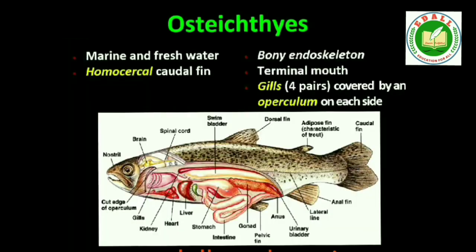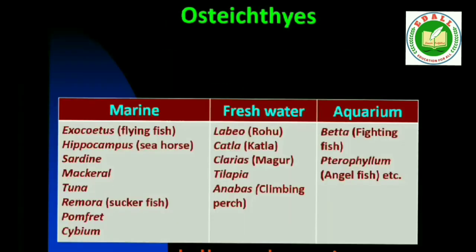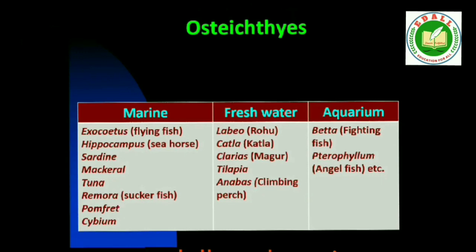Third is Class Osteichthyes. It includes both marine and freshwater fishes with bony endoskeleton. Their body is streamlined. Mouth is mostly terminal. They have four pairs of gills which are covered by an operculum on each side. Skin is covered with cycloid or ctenoid scales. Air bladder is present which regulates buoyancy. Heart is two-chambered — one auricle and one ventricle. They are cold-blooded animals. Sexes are separate. Fertilization is usually external. They are mostly oviparous and development is direct. Examples — Marine: Exocoetus (flying fish), Hippocampus (sea horse). Freshwater: Labeo (rohu), Catla, Clarias (magur). Aquarium: Betta (fighting fish), Pterophyllum (angel fish).